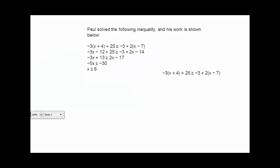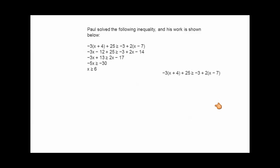Now for this next problem, let's take a look at Paul and what he did solving the following inequality. Paul has solved this inequality, and if you see a question like this where the steps are written out, they're going to want you to identify where Paul made a mistake. One thing you can do is solve the problem yourself and see what answer you get to see where the steps are different.